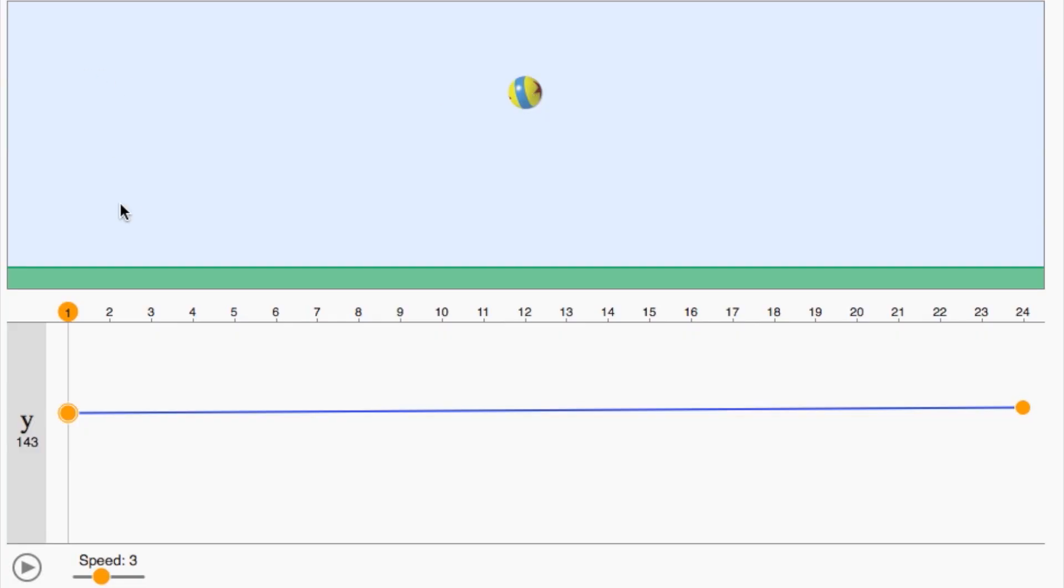Now let's see how we use the same technique of pose-to-pose animation on the computer. We'll start by positioning the ball up in the air on frame one, just like before. And then we'll skip ahead to frame nine and put the ball on the ground.